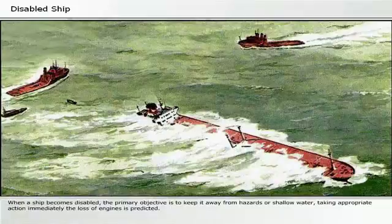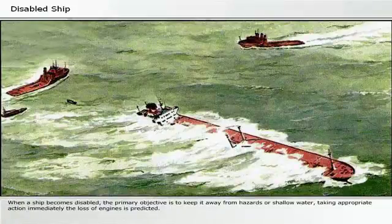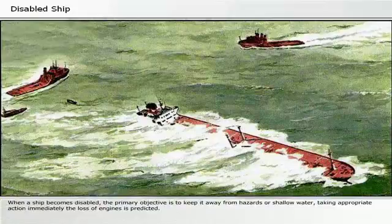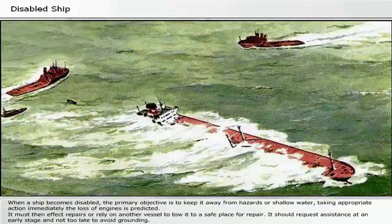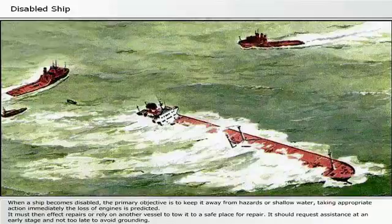When a ship becomes disabled, the primary objective is to keep it away from hazards or shallow water, taking appropriate action immediately the loss of engines is predicted. It must then effect repairs or rely on another vessel to tow it to a safe place for repair. It should request assistance at an early stage and not too late to avoid grounding.